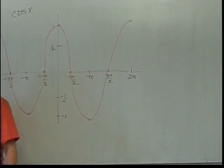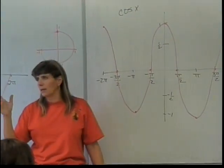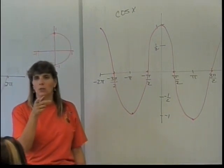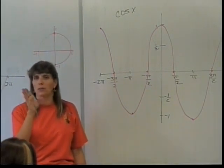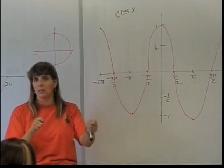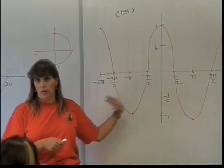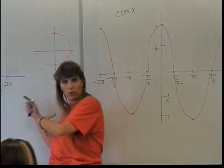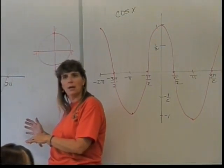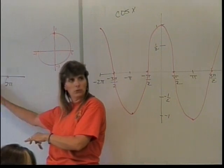That's the case — remember the co-function identities? The sine of an angle is equal to the cosine of 90 minus the angle. That means we can just move these back and forth and match them up if we want to. The graph shape is exactly the same; they're just shifted with the angles.